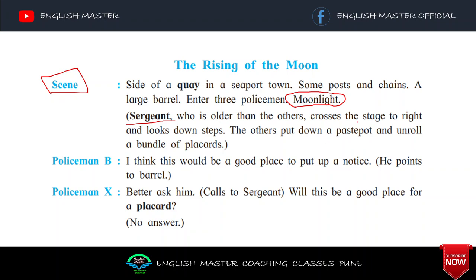The others put down a paste pot and unroll a bundle of placards. Placard ka matlab hai — a sign for public display, either posted on the wall or carried during a demonstration. Yaani jo newspaper mein ads vaghera aate hain, write pamphlets — jis se humein information milti hai, isko placard kehte hain. Policeman B says: 'I think this would be a good place to put up a notice,' pointing to the barrel. Then Policeman X says 'Better ask him' — calling to the sergeant: 'Will this be a good place for a placard?' No answer.